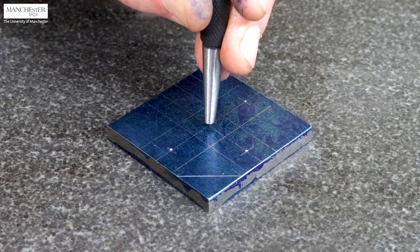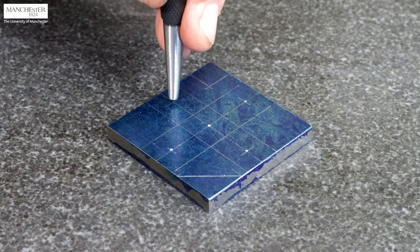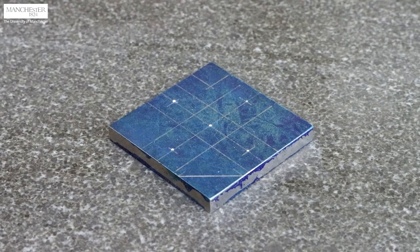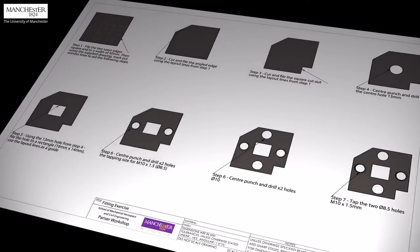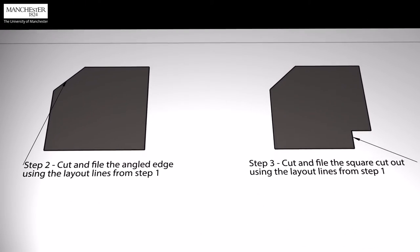With the centre punch, mark the centre of the holes for drilling later. These will allow using a full size drill to open the holes. Now we will see how to saw the angled and square corners to obtain the third stage.